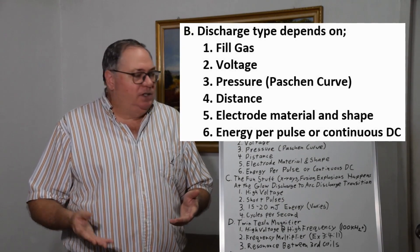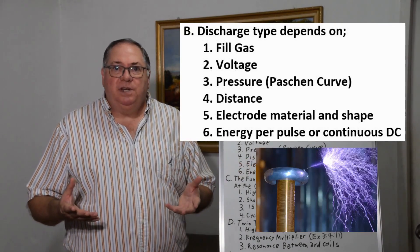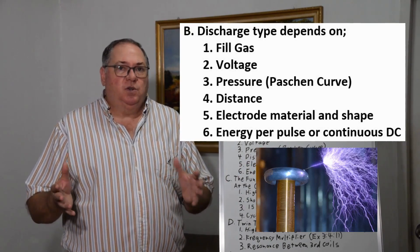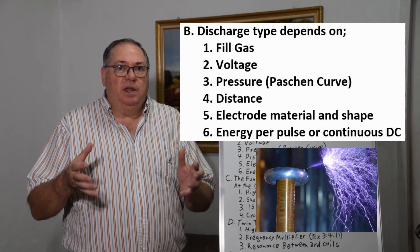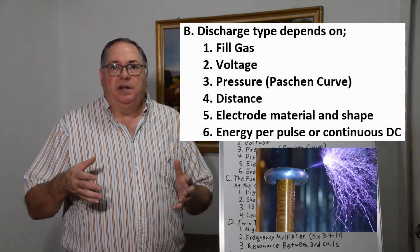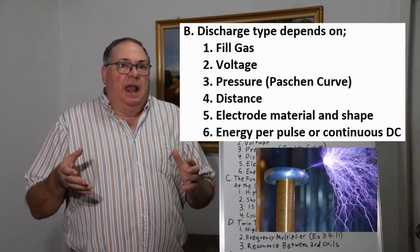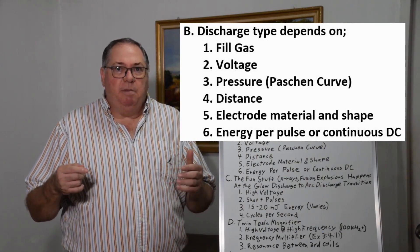Electrode material and shape matter. If you have a round electrode like a sphere or toroid, you can increase the breakout voltage. That's why you see toroids used on Tesla coils. For regulated voltage, you may want a sharper point.